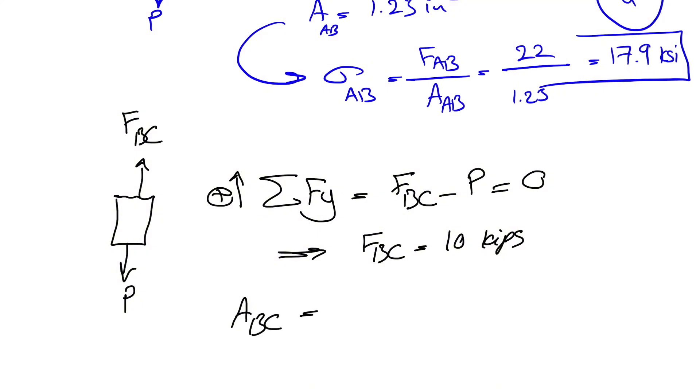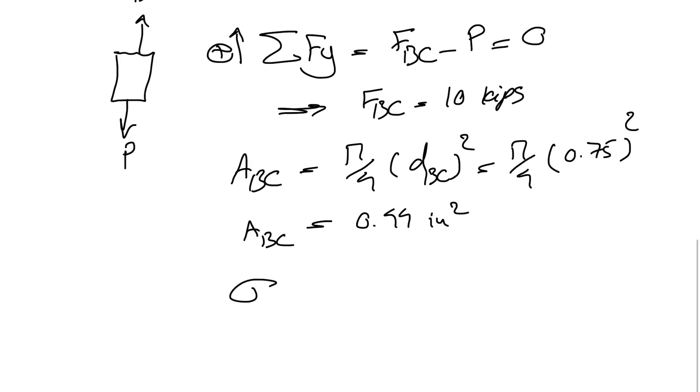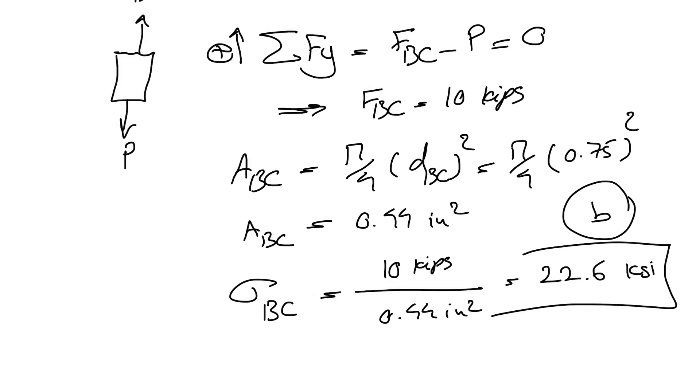Now we need to find the area of the rod BC in order to find the average normal stress in the next step. So we have pi divided by 4, this time D_BC squared, so pi divided by 4 we know D for rod BC is 0.75 inch and from here we can find A_BC 0.44 inches squared and the average normal stress for BC would be 10 Kips divided by 0.44 inches squared and that's going to be 22.6 KSI and that would be the answer for the B part of the question.